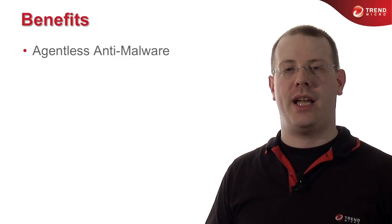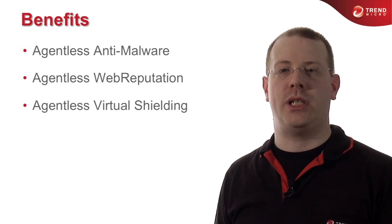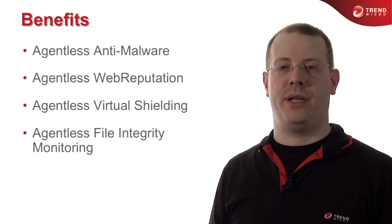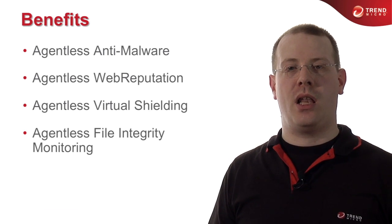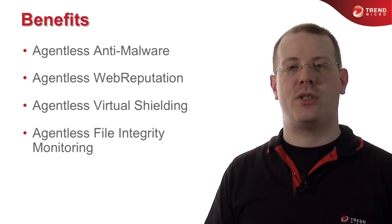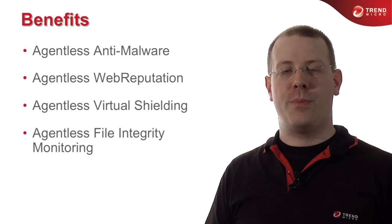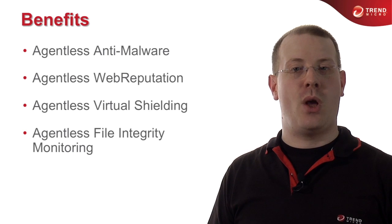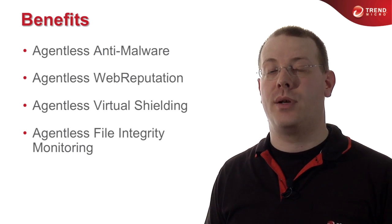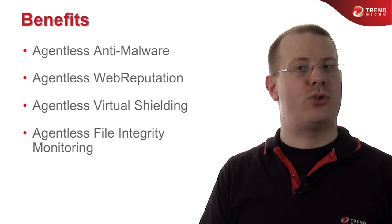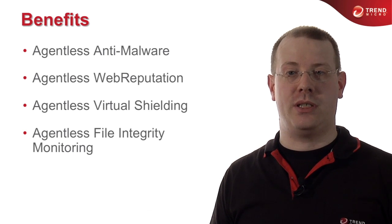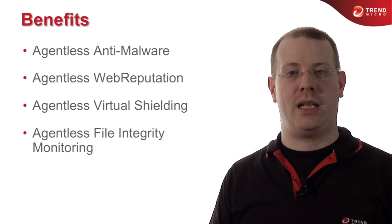We just saw how Trend Micro's Deep Security provides agentless anti-malware, agentless web reputation, and agentless virtual shielding. Let's talk about file system integrity monitoring, which allows you to track changes to the file systems of your virtual machines. To prevent being overwhelmed by the number of events, file system integrity monitoring differentiates between well-known good events and the rest — well-known good events might be caused by service packs, updates, or your own software, and everything else is flagged as suspicious.